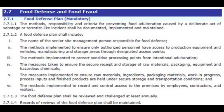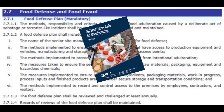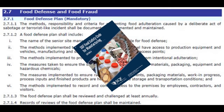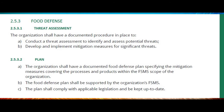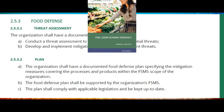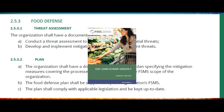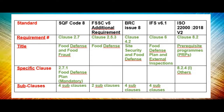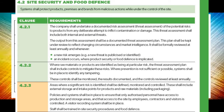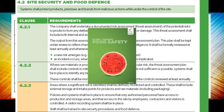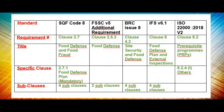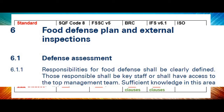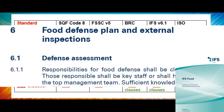In SQF Code 8, clause 2.7 talks about food defense with 4 sub-clauses. FSSC Version 5 has an additional requirement clause 2.5.3 with 2 sub-clauses. BRC Issue 8 has clause 4.2 with the title 'Site Security and Food Defense' with 4 sub-clauses. IFS Version 6.1 talks about food defense in clause 6, containing 4 sub-clauses.